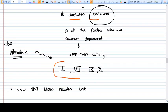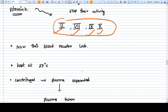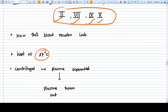The factors dependent on vitamin K and calcium are factor 2, factor 7, factor 9, and factor 10. This blood reaches the lab and is kept at 37°C body temperature.